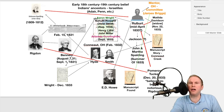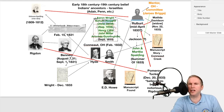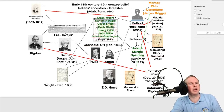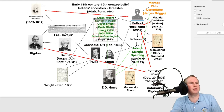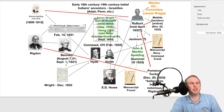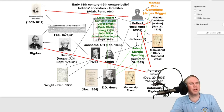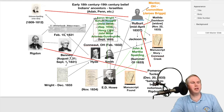Holbert then went to see E.D. Howe in Painesville, Ohio. He gave Howe all the affidavit statements from Aaron Wright, Nahum Howard, Oliver Smith, Henry Lake, John Miller, Artemis Cunningham, and John and Martha Spalding. He also gave Howe the Manuscript Story. E.D. Howe visited the witnesses himself before publishing his book and found them to be respectable and honest men. He published all this information in November 1834 in his book Mormonism Unveiled.